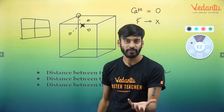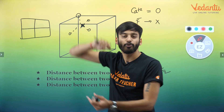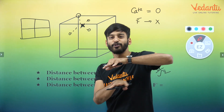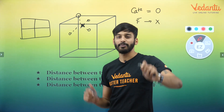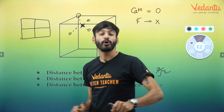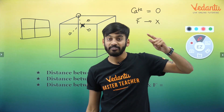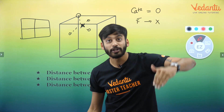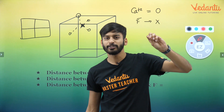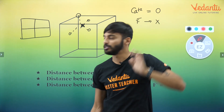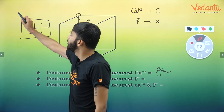Imagine 8 cubes — 4 on the ground floor and 4 on the first floor. The tetrahedral void is present in each small cube exactly at the center — at the body center. So F⁻ will be here, here, here, here, and here. Since the distance from corner to corner is a, the distance from corner to the void center will be a/2.